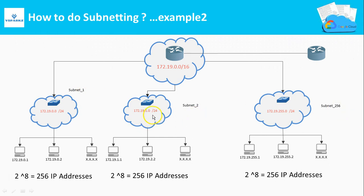If you use a CIDR value of /24 for the subnets, you will get 256 subnets, and in each subnet 2 to the power of 8 — that is, 256 IP addresses — are available. Now you should be familiar with how to do subnetting. Please try on your own with different CIDR ranges for subnet calculations.